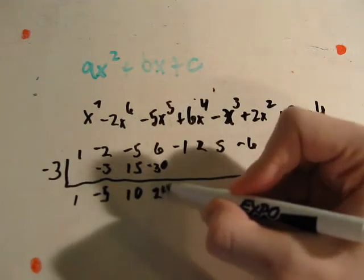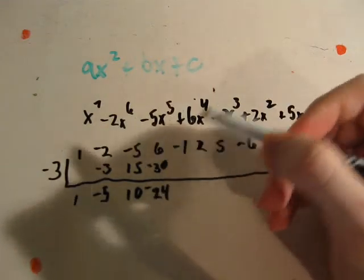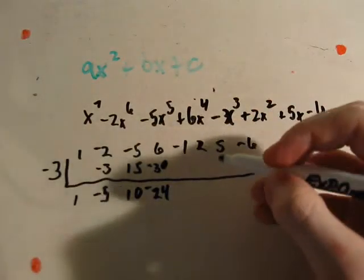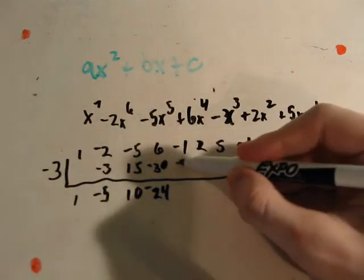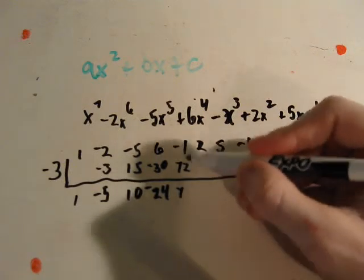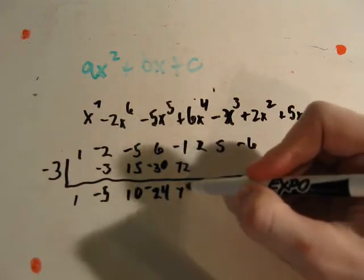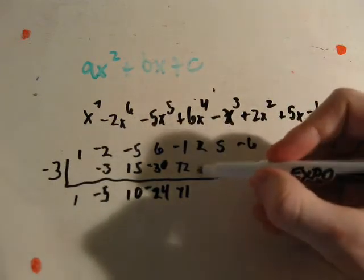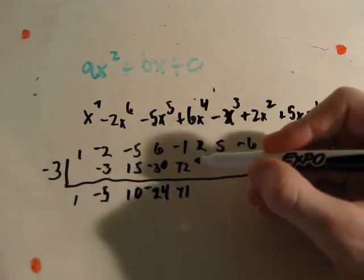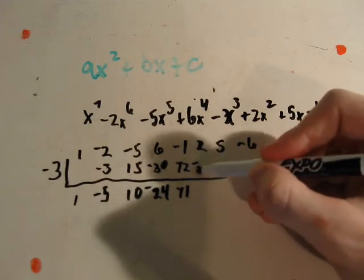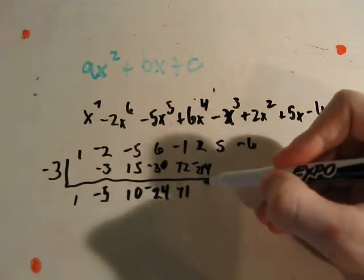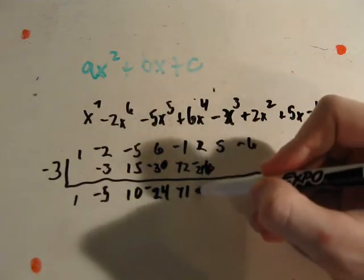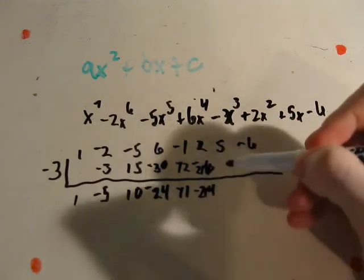Add these together you get 24. Negative 24. Negative 3 times negative 24 is 72, minus 1, or plus negative 1, that's 71. Multiply negative 3 times that, that's negative 214. And then, 216, and then negative 214 is our answer.